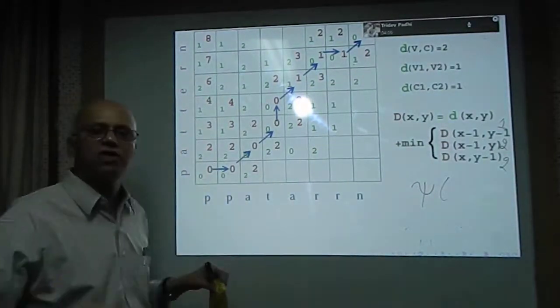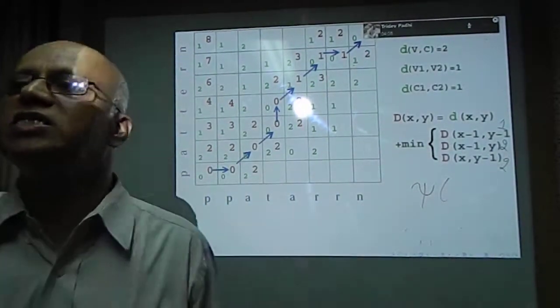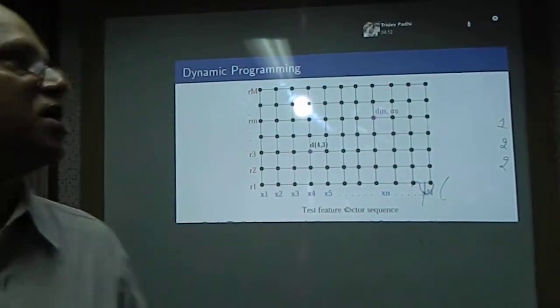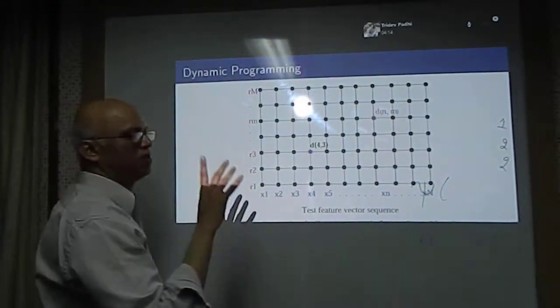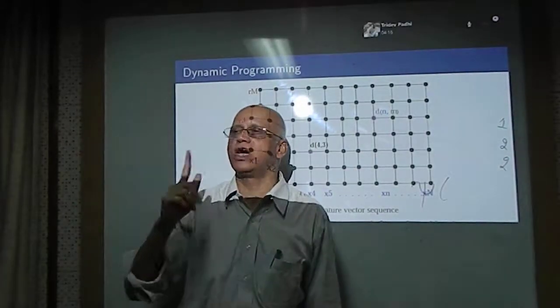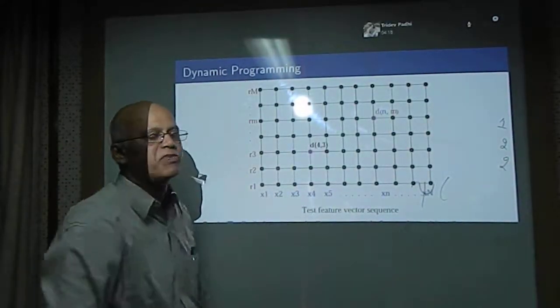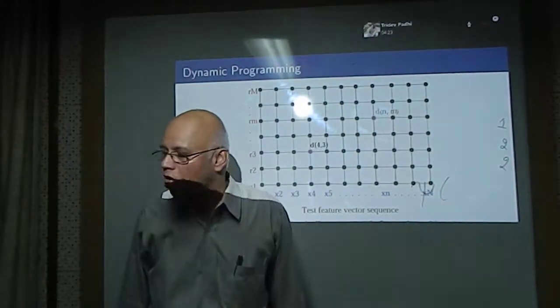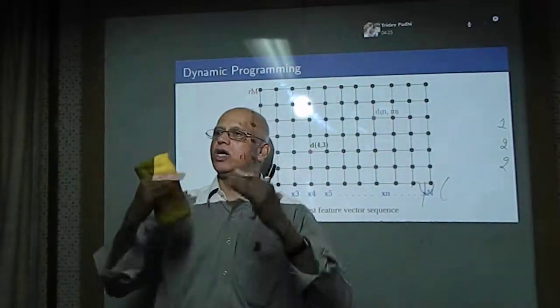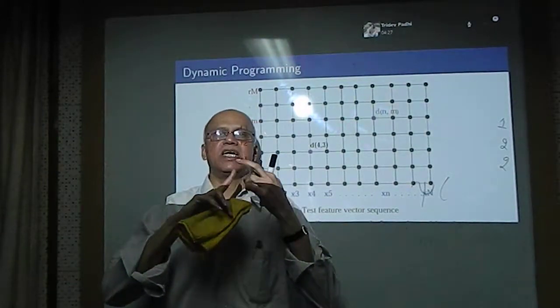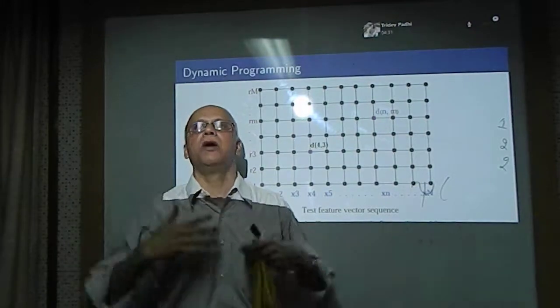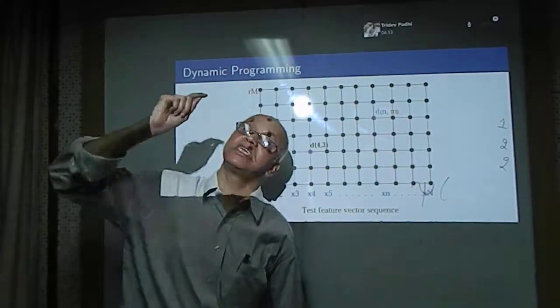So far, whenever we speak a sentence or word, we used to keep one reference pattern. We speak the word zero once and store it there. But what is the guarantee that the zero I say today and tomorrow will be the same? It will not be. Therefore, it is good not to represent a reference pattern using one utterance of a word but multiple utterances of the same word.